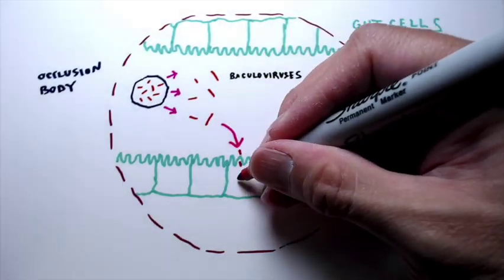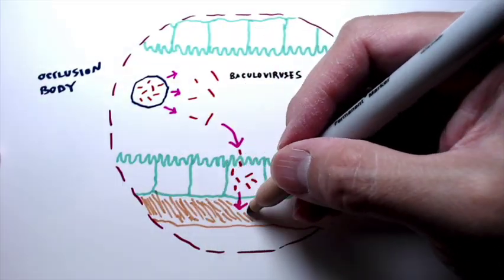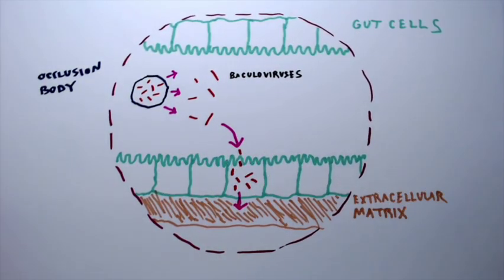For a successful infection, the virus must overcome barriers, including a layer of extracellular matrix surrounding the gut, before it can spread to deeper tissues. We investigated how it does this.